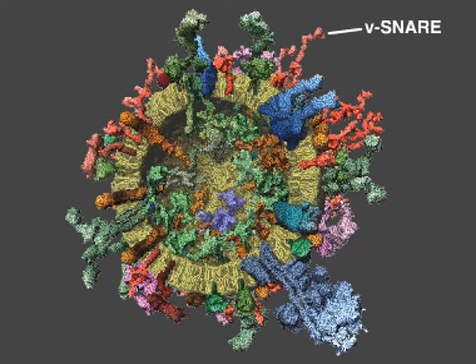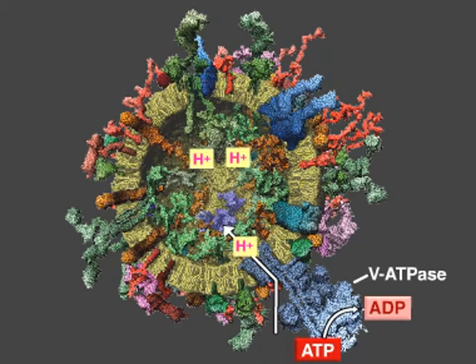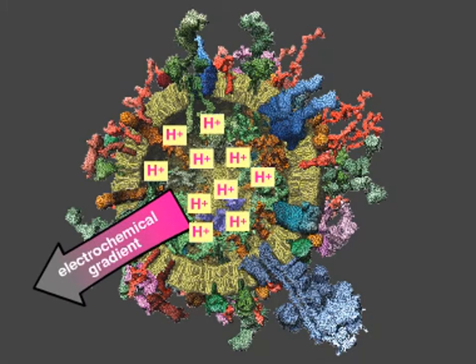By contrast, the vesicle contains only one to two copies of V-ATPase. The V-ATPase uses energy from ATP hydrolysis to pump protons into the vesicle lumen. The resulting electrochemical gradient provides the energy to import neurotransmitter molecules, such as glutamate, into the vesicle.